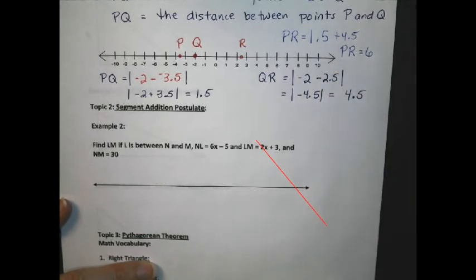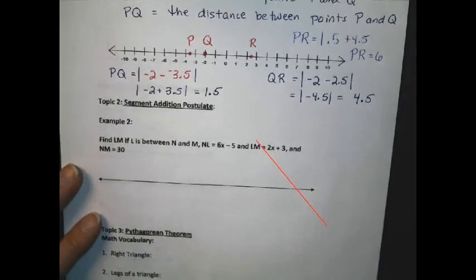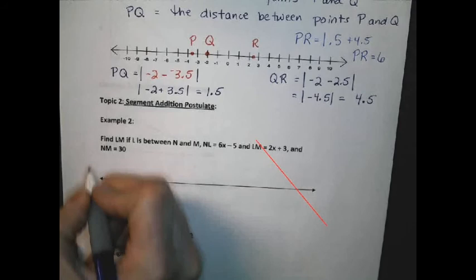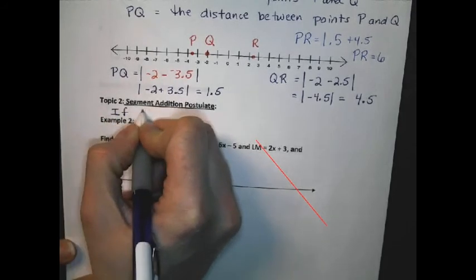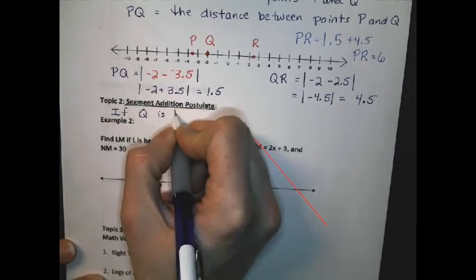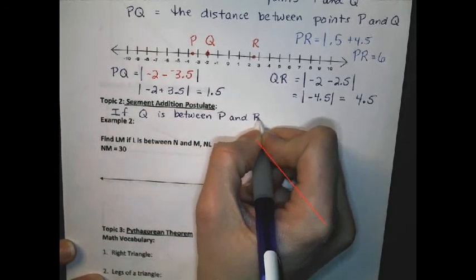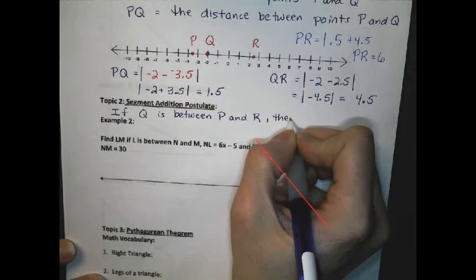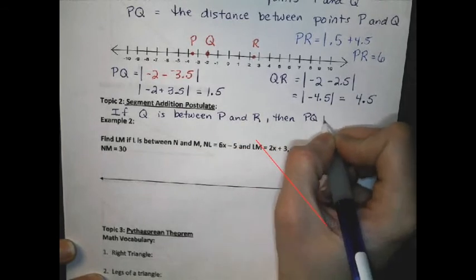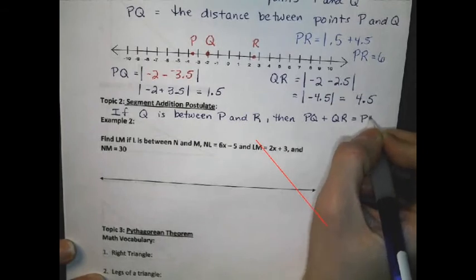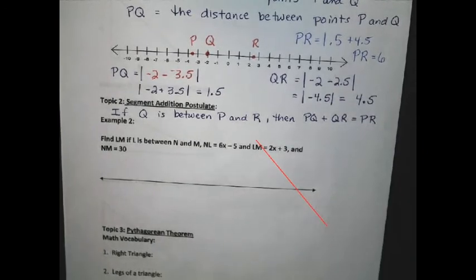This segment addition postulate can always be used to add segments. The postulate says that if Q is between P and R, then PQ plus QR equals PR. This is a very common postulate that we will use time and time again in geometry.